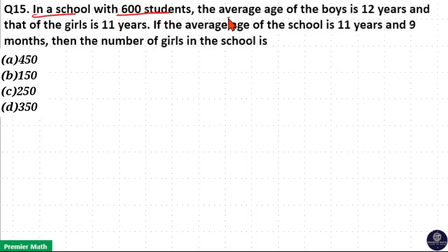In a school with 600 students, the average age of the boys is 12 years and that of girls is 11 years. If the average age of the school is 11 years and 9 months,